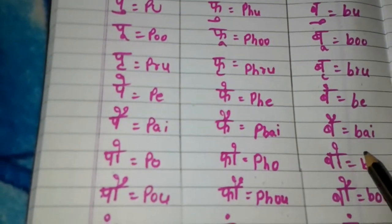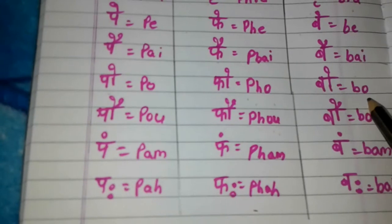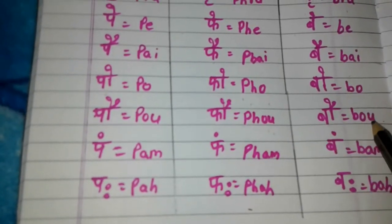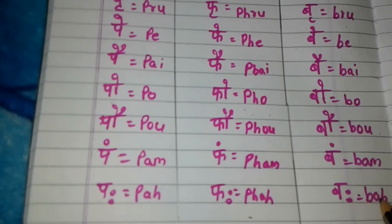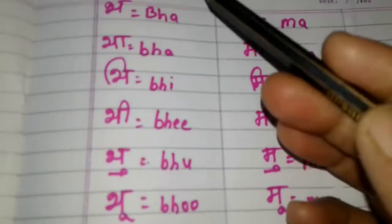Be, B-E. Bai, B-A-I. Bo, B-O. Bou, B-O-U. Bam, B-A-M. Bah, B-A-H. Okay, the next letter.